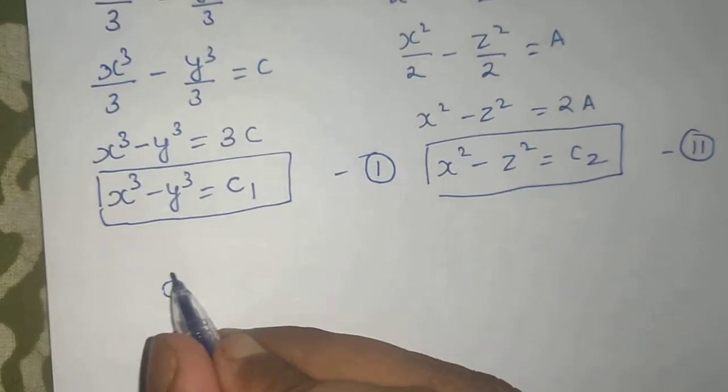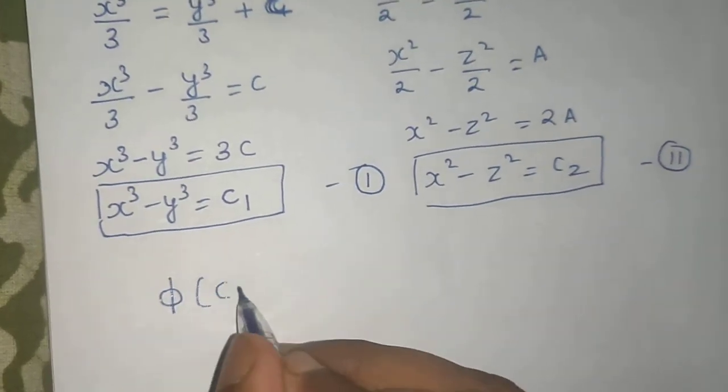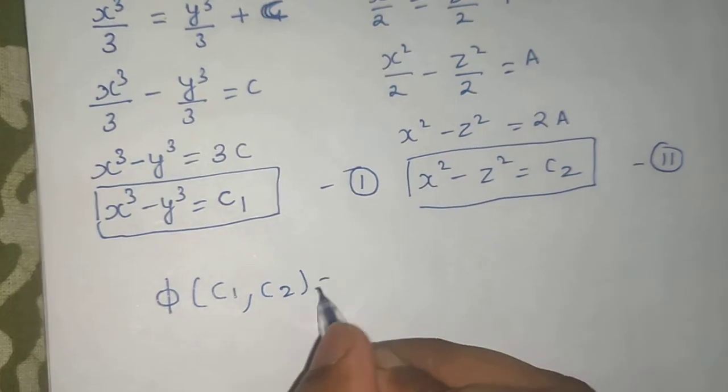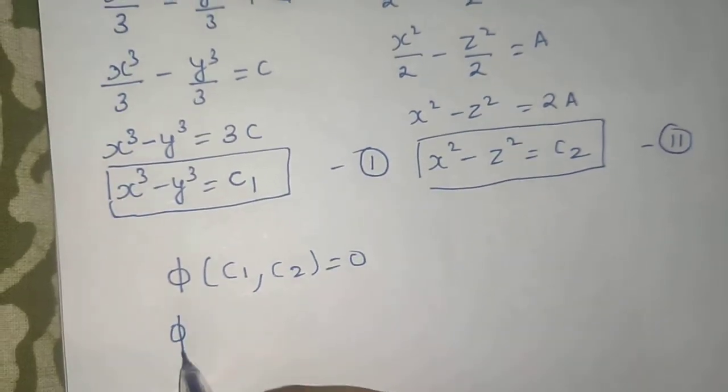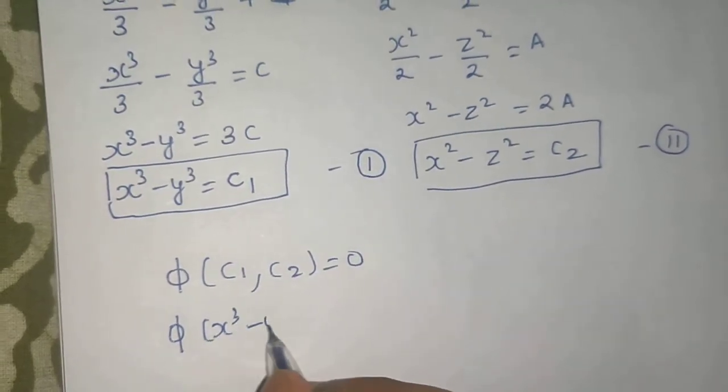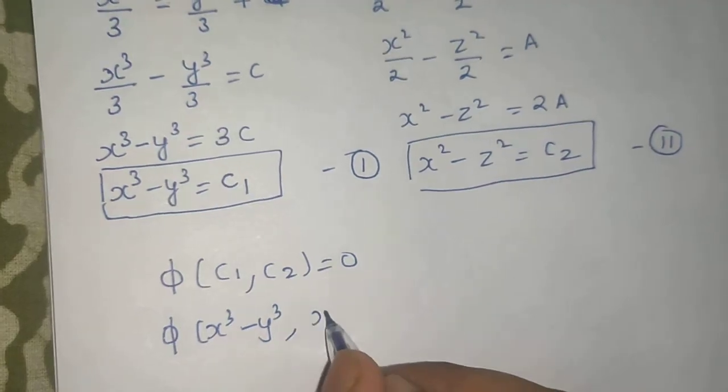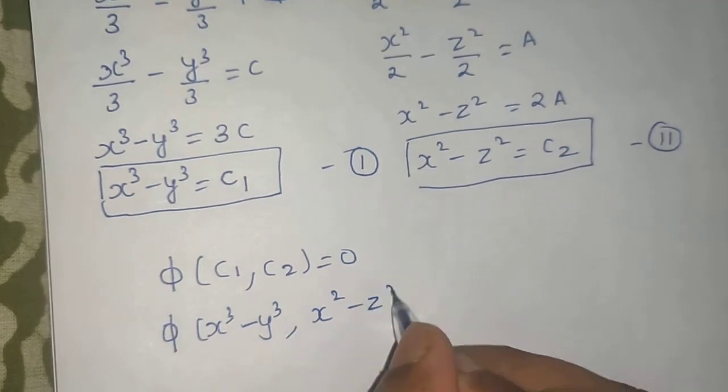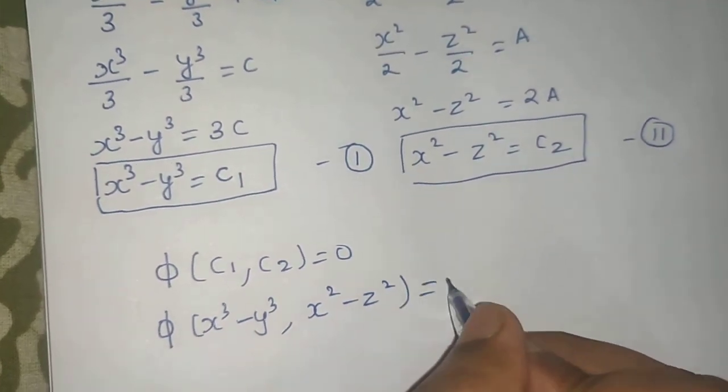Final answer is always of this form: phi of C1 comma C2 equals to 0. So phi of x cube minus y cube is C1 and x square minus z square is your C2 equals to 0.